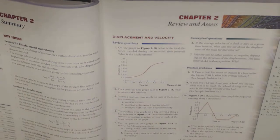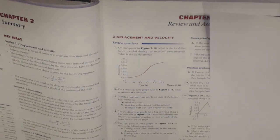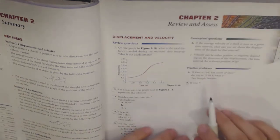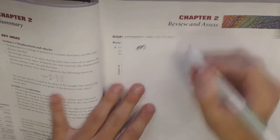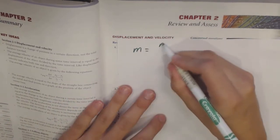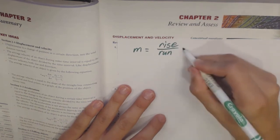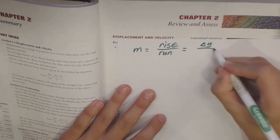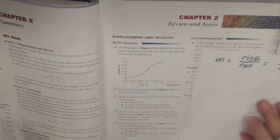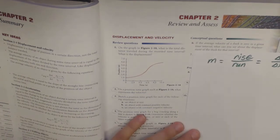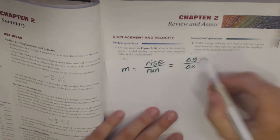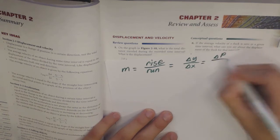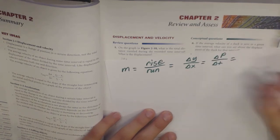The next question is question 2 on page 69: on a position-time graph such as figure 2-18, what represents the velocity? Velocity on a position versus time graph is going to be the slope of the graph. Slope is rise over run, which equals change in Y over change in X. In this case the Y value is position and the X value is time, so slope becomes change in position over change in time — the same thing as average velocity.